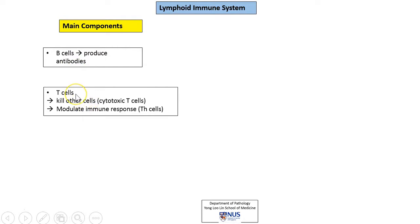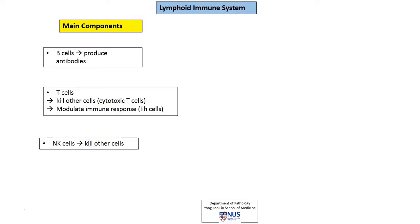Then we have the T cells or T lymphocytes. Now there are several types of T cells. One type, the cytotoxic T cells, can actually kill other cells. We also have the helper T cells, which help to modulate the immune response by producing cytokines. In addition, there is another cell type known as the NK cell or natural killer cells, responsible for killing other cells and thereby getting rid of the agents that cause injury.